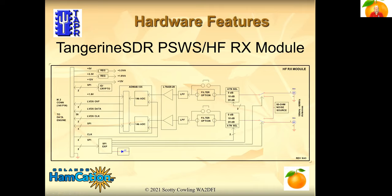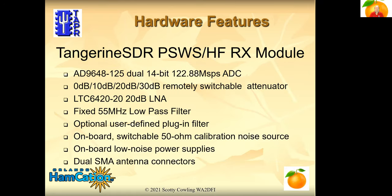The RF module kind of defines the RF performance of the radio. This is the first RF module we have, and here's the block diagram of the module that plugs in — it's a pluggable module. Features include dual 14-bit A-to-D at 122 mega-samples per second. We have an attenuator on board as well as a low noise amplifier, a fixed 55 MHz low-pass filter which is removable in case you want to do under-sampling, onboard calibration noise sources, and a user-defined plug-in filter slot. So you can plug in your own custom filter or even a pre-amplifier on the headers of the RF module.